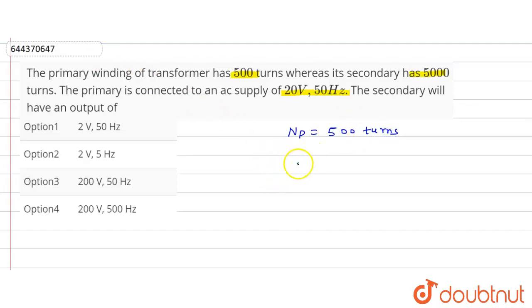And the number of turns in the secondary winding NS is how much? NS is equal to 5000 turns given. So here the voltage of the primary coil VP is given as how much? 20 volt.